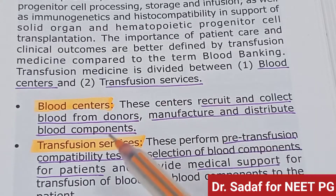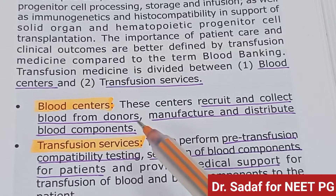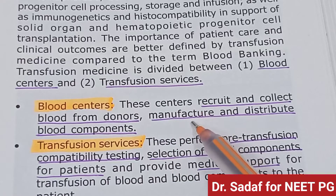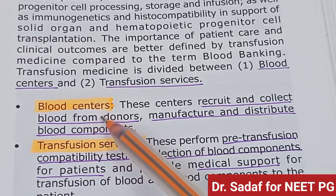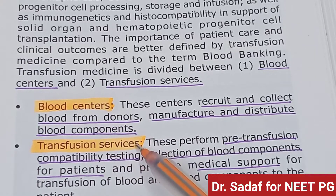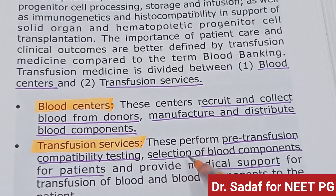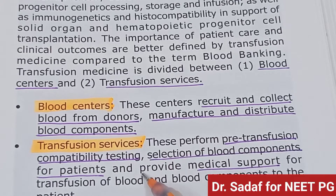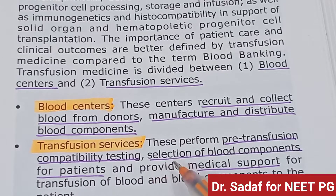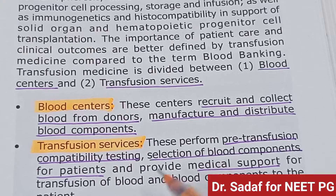The blood center manufactures and distributes blood components. Transfusion services perform pre-transfusion compatibility testing and selection of blood components for the patient.